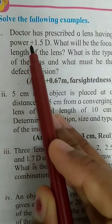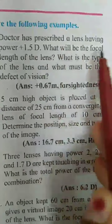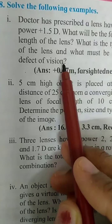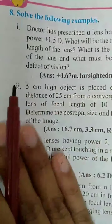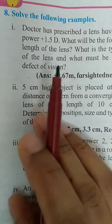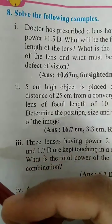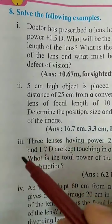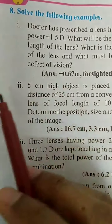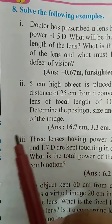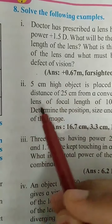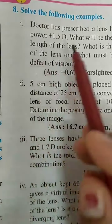The first question is: a doctor has prescribed a lens having power positive 1.5 diopter. What will be the focal length of the lens? What is the type of the lens and what must be the defect of vision? The defects in vision I have not discussed with you till now, but while I solve the sum I will tell you roughly. In detail, we will discuss it in the coming videos. If you have not gone through the previous video, go through those videos, get your concept clear, learn the definitions and formulas, and then come and solve.